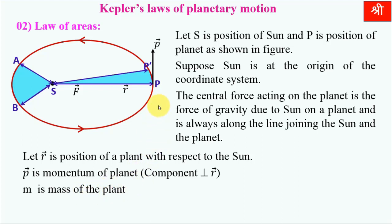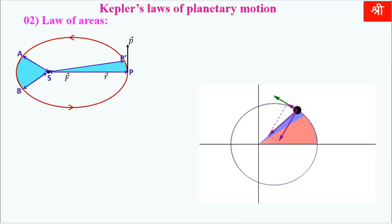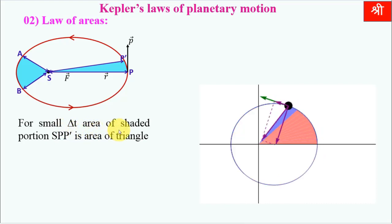Let M be the mass of the planet and delta A be the area swept by the planet in time delta T. In this time delta T — whether one minute, one hour, or one month — the area covered is delta A, shown as the shaded area in the triangle S-P-P-dash. The rate of change of area with respect to time, delta A upon delta T, is also constant and is called aerial velocity.